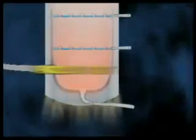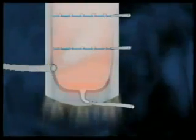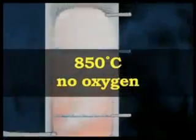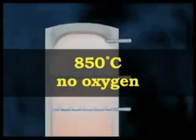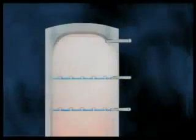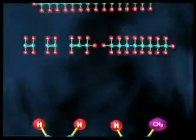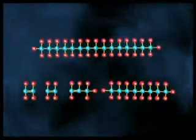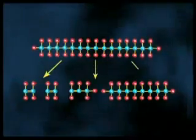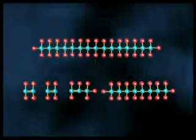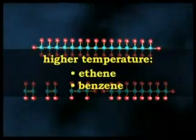In thermal steam cracking, the hydrocarbon is diluted with steam and then briefly heated in a very hot furnace — around 850 degrees Celsius — without oxygen. The reaction is only allowed to take place very briefly. Light hydrocarbons break down to the lighter alkenes, including ethene, propene and butene, which are useful for plastics manufacturing. Heavier hydrocarbons break down to some of these, but also give products rich in aromatic hydrocarbons and hydrocarbons suitable for inclusion in petrol or diesel. Higher cracking temperature favours the production of ethene and benzene.